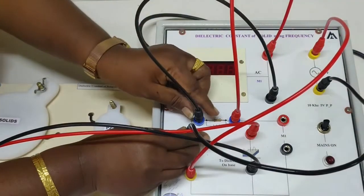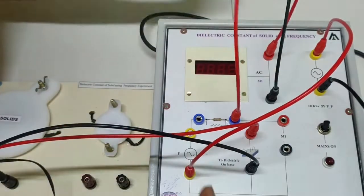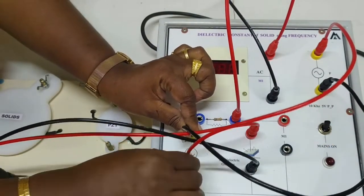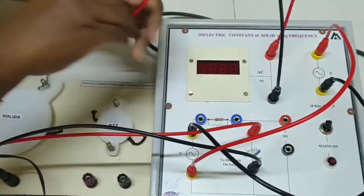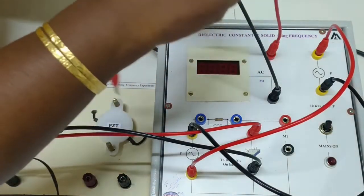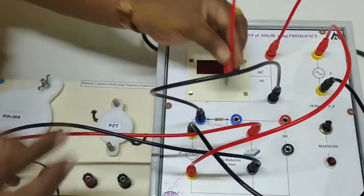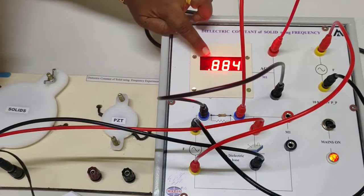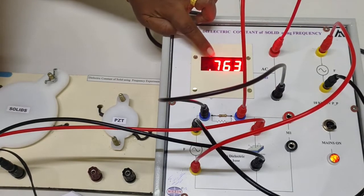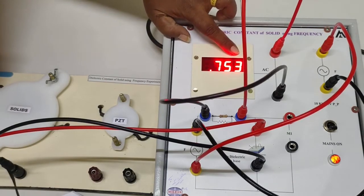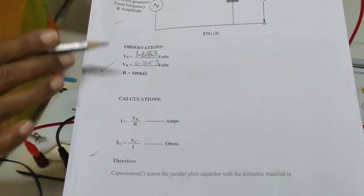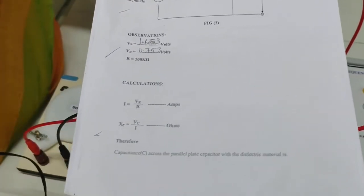Once the connections are modified, switch on the board again and take down the reading. The value is approximately 0.753. So we have now taken both values: voltage across the capacitor (Vc) and voltage across the resistor (Vr). That is all — our experiment is over. The calculation part will be explained in the next video. Thank you everyone.